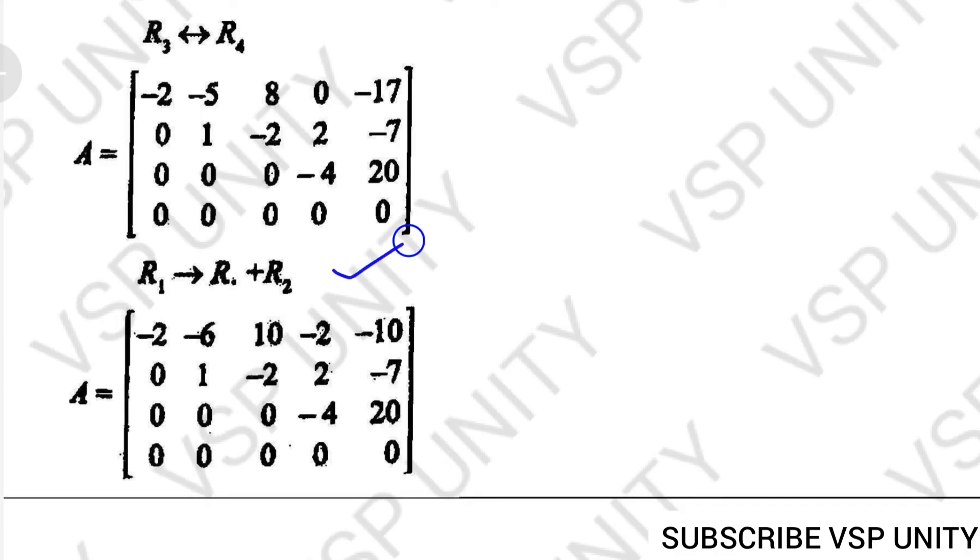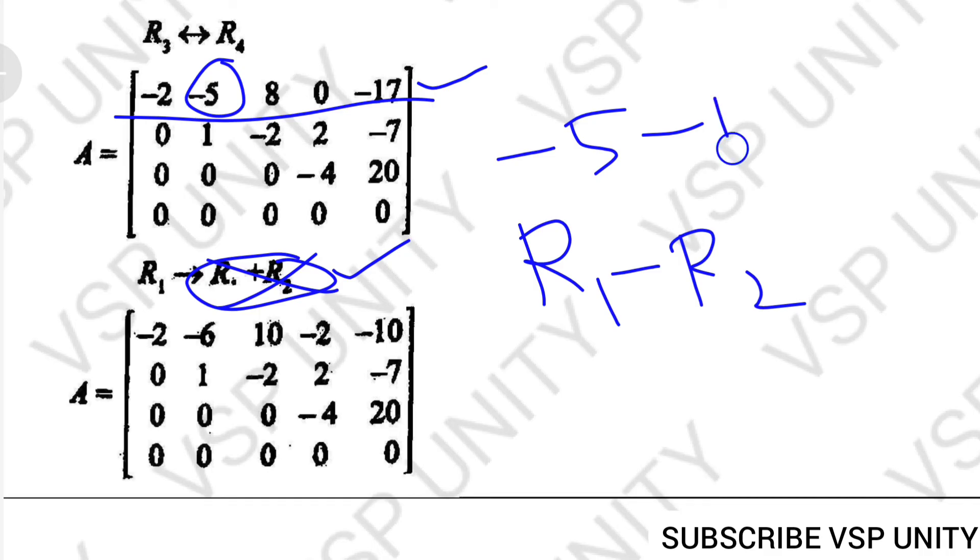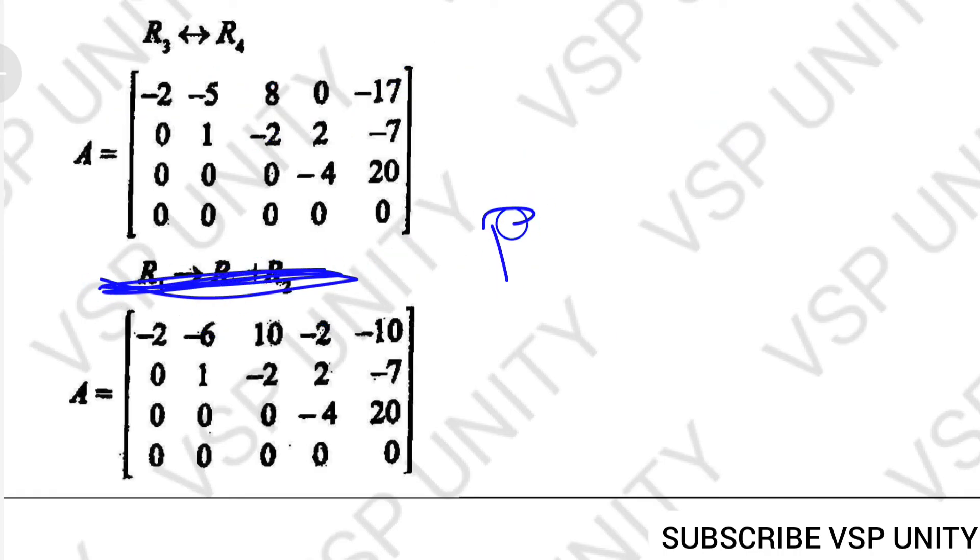If you change R1 minus R2, then it will be -5 minus 1 means -6, 8 minus -2, 8 plus 2 is 10, 0, 0 minus 2 is -2, then -17 plus 7 is -10. Once you check this, R1 changes to R1 minus R2, then you will get this step.